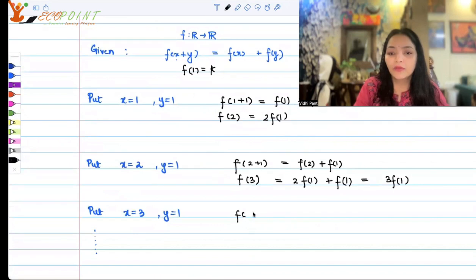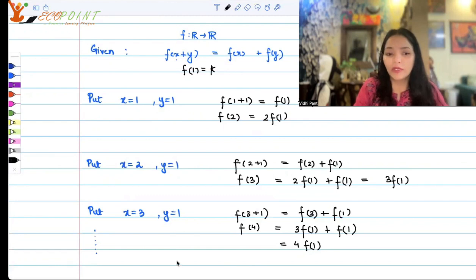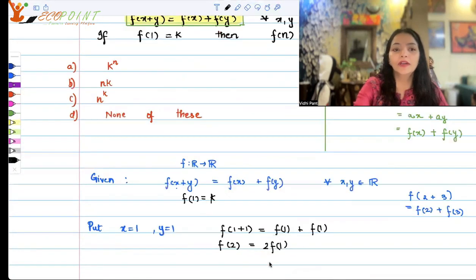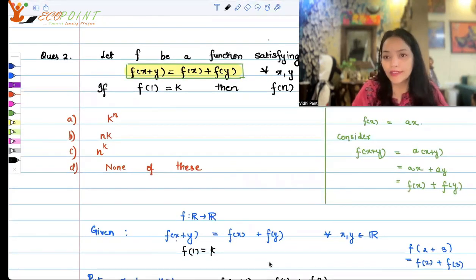Similarly, if you wish to move a little further, you can put x = 3, y = 1, and you're going to get f(3) + f(1) on the right-hand side and f(4) on the left. So f(4) is equal to—I can substitute—I'm getting 3f(1) + f(1). Hence, the pattern is pretty much clear from here that in case the input is n, the output is nf(1). And since it's given to us that f(1) = k, clearly the answer would be n times k. So the answer is option B, which is n times k.